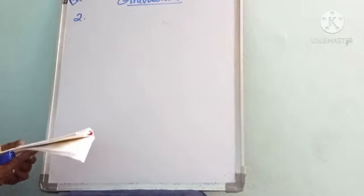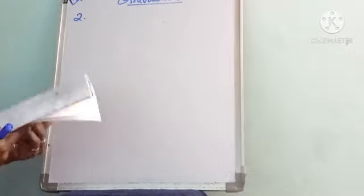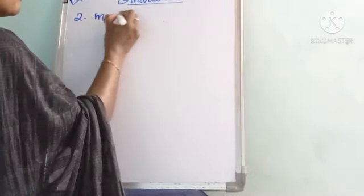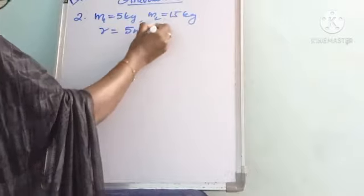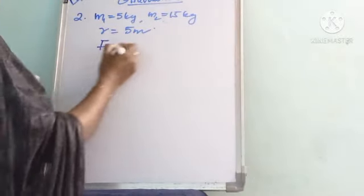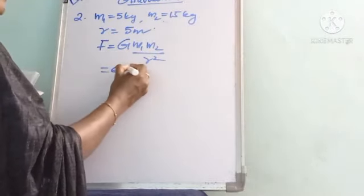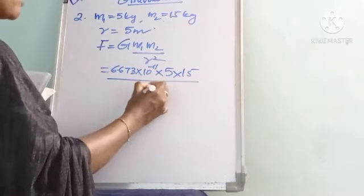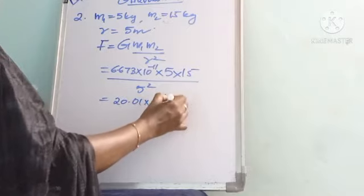Second question: two bodies of masses 5 kg and 15 kg are separated by a distance of 5 m. Calculate the gravitational force between them. Here m1 = 5 kg, m2 = 15 kg, r = 5 m. Using F = G·m1·m2 / r², we substitute G = 6.673×10⁻¹¹, m1 = 5, m2 = 15, divided by 5². Simplifying, the force is 20.01×10⁻¹¹ N.